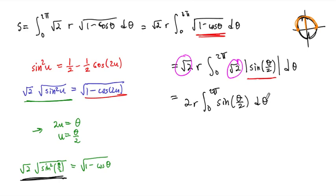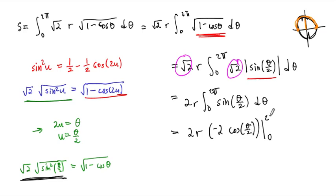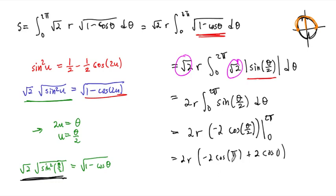This integral is straightforward. The antiderivative of sine of theta over two is negative two cosine of theta over two. Evaluating from zero to two pi gives two r times negative two cosine of pi minus negative two cosine of zero, which is two r times negative two times negative one plus two times one. That gives two r times two plus two, which is two r times four, equaling eight r. So the arc length of one cycle of the cycloid is eight r, where r is the radius of the circle used to build the cycloid.